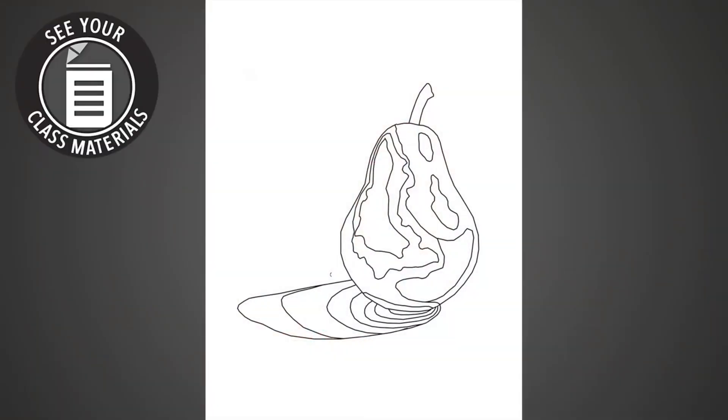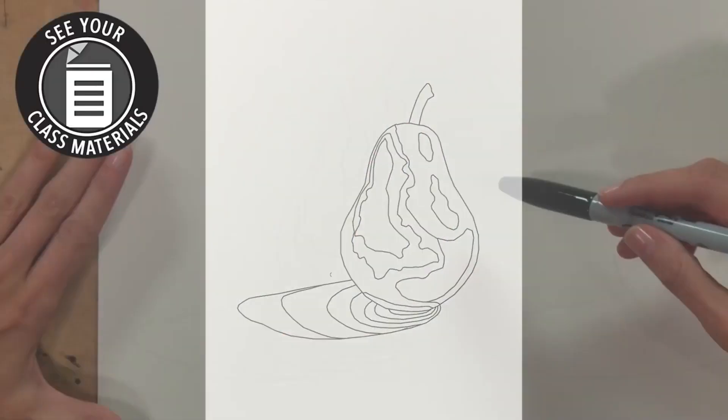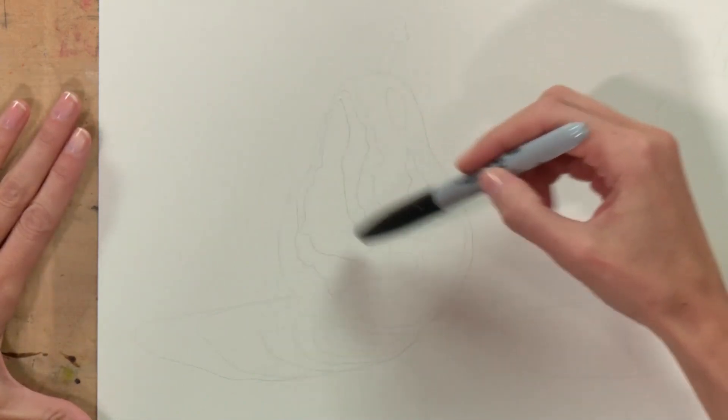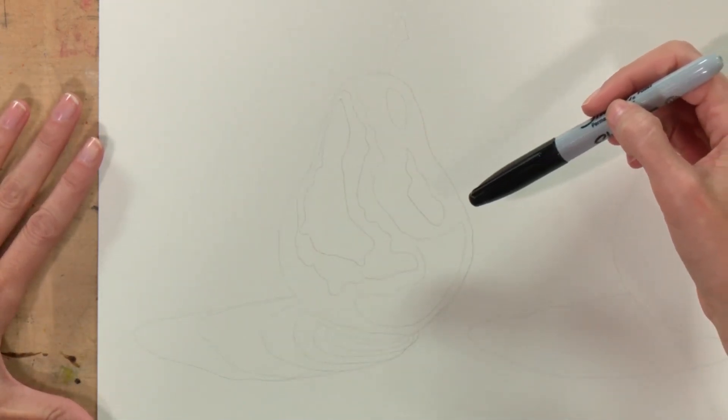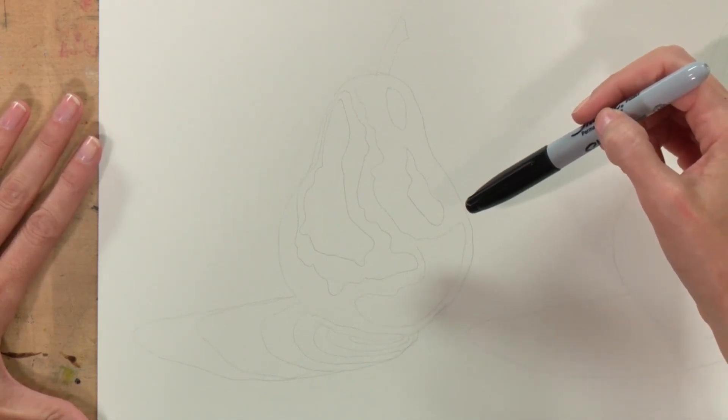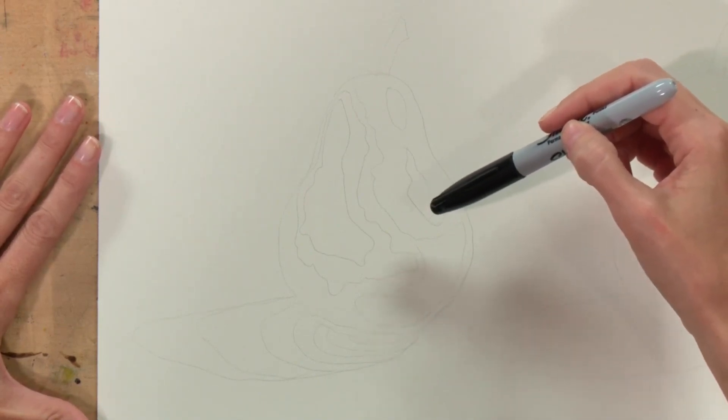Now we're going to stipple a pear to start off with. As you can see, I have a very light outline of a pear and there's all these funny little lines marked up inside. That's just basically a guideline that I created for myself in order to figure out what tones will go where.